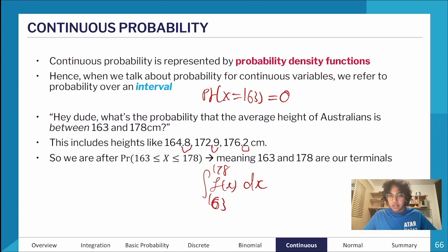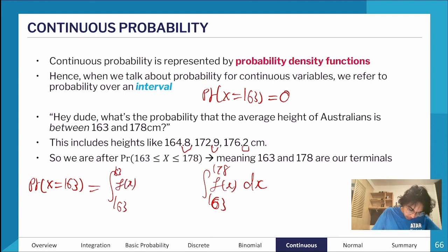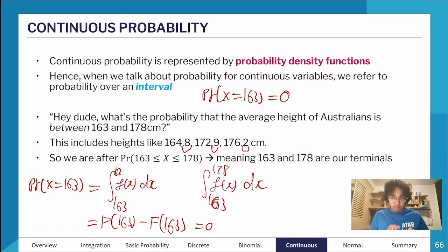One possible explanation is that if I want to work this out for a probability density function, when it's a continuous function, what I'm doing is taking an integral from 163 to 163 of f(x) dx, which is just capital F(163) minus F(163), which equals zero. Mathematically that's sound.